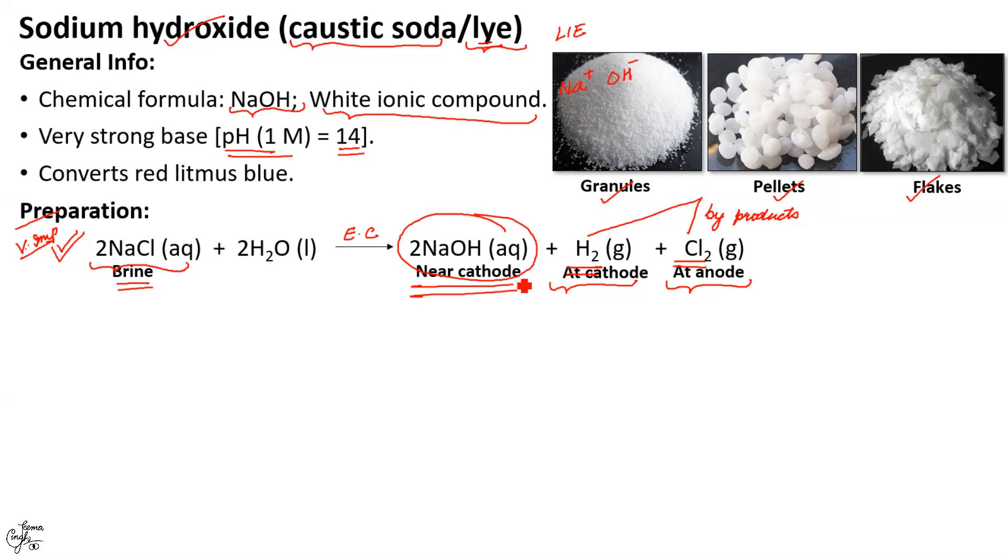This process which is majorly used for industrial manufacture of sodium hydroxide is known as the chlor-alkali process because of the formation of the products chlorine.